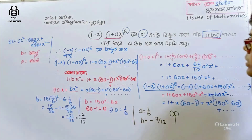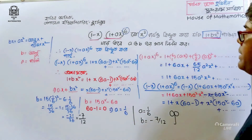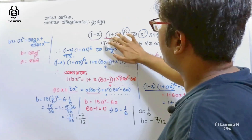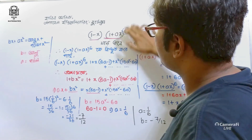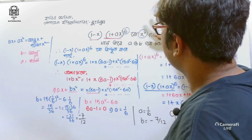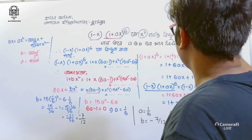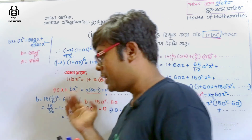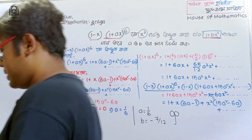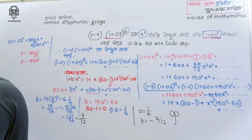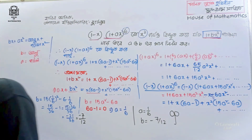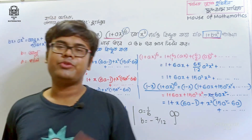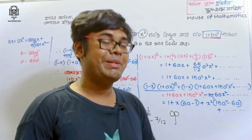So we can see that for 1 minus x into 1 plus x to the power 6, the answer is: a is equal to 1 by 6 and b is equal to minus 7 by 12.